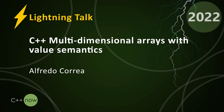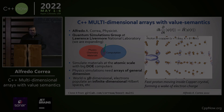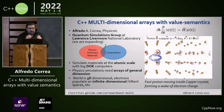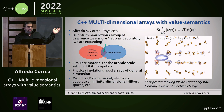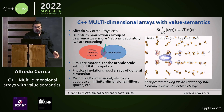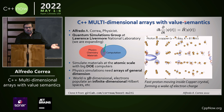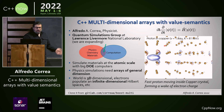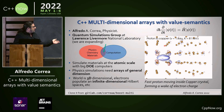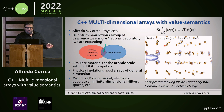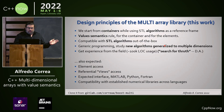Hello everybody. My name is Alfredo. I'm a physicist. I work at Lawrence Berkeley National Laboratory and what we do is simulate materials at the atomic scale with DOE computers. We do quantum mechanics. My group is called the Quantum Simulations Group and what we do is solve the time-dependent Schrödinger equation and do these cool simulations. Physics simulations need arrays everywhere — the world is three-dimensional and electrons live in an infinite-dimensional hidden space, so we need arrays of all dimensions basically.